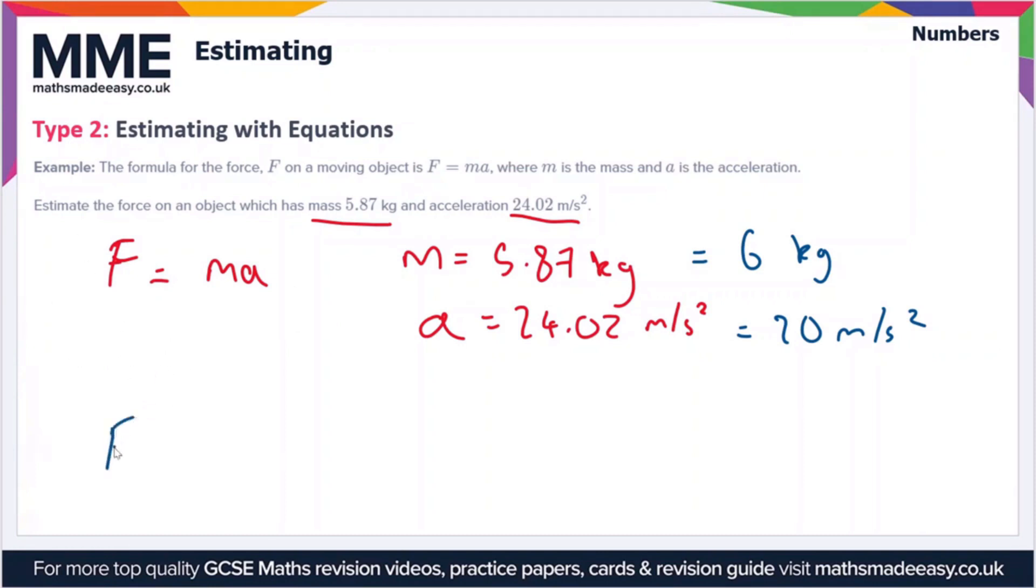But what we're going to do now is write the expression force is equal to mass times acceleration. So that's 6 times 20. Seeing as though we're using an approximation here, we can say that the force is approximately equal to...